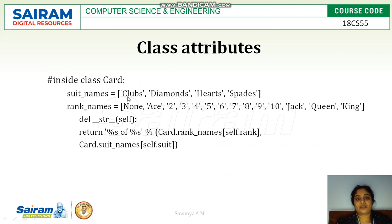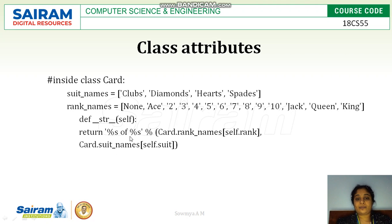The class attributes include suit_names defined as a list: Club, Diamond, Heart, and Spades. rank_name is a list where index 0 is None, index 1 is Ace, index 2 is 2, index 11 is Jack, index 12 is Queen, and index 13 is King. The str method returns the card's rank name and suit name using %s of %s, referencing self.rank and self.suit.